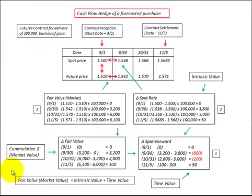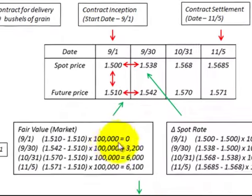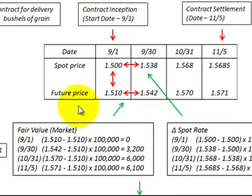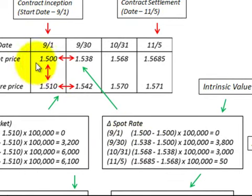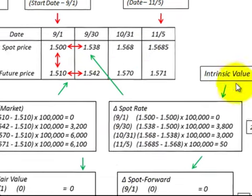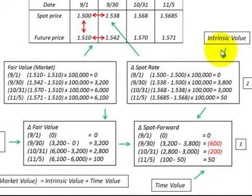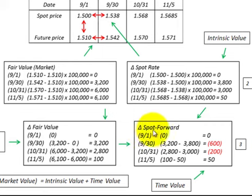With this cash flow hedge, the fair value or market value of the hedge is equal to the intrinsic value plus the time value portion of the contract. We first have to determine the change in fair value of the hedge or contract, which requires knowing the futures price. Then we determine the change in spot rate, which is the intrinsic value of the contract. Knowing the fair value, we can determine the change in fair value of the contract. Then from the change in fair value and the change in spot rate, we can determine the time value of the contract — that would be the change in the spot forward rate.